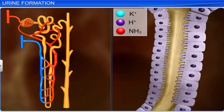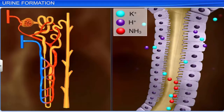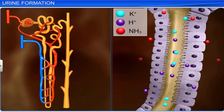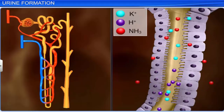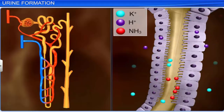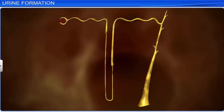Apart from absorption, the cells in the renal tubule also selectively secrete substances such as potassium, hydrogen ions, and ammonia into the filtrate to maintain the pH and ionic balance in body fluids. This process of reabsorption and secretion occurs in different parts of the renal tubule, namely the proximal convoluted tubule (PCT), Henle's loop, and distal convoluted tubule. The collecting duct also takes part in the process.